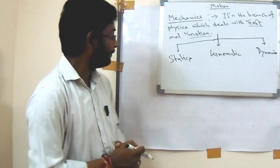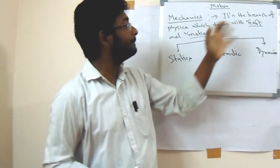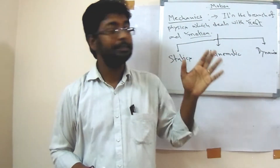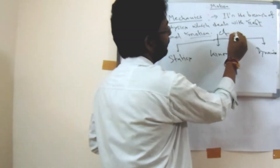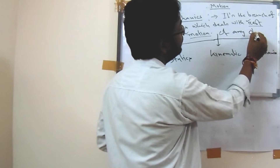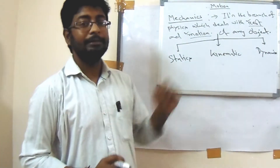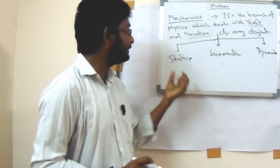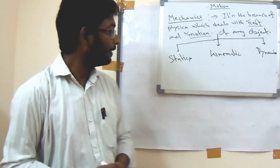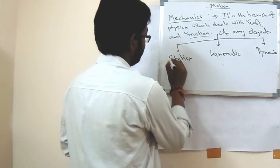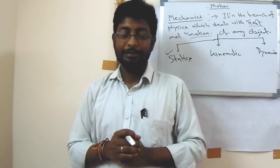So first, what is statics? You can understand that mechanics is the branch of physics which deals with the rest and motion of any object. Now mechanics has three types: statics, kinematics, and dynamics. So what is statics? The very basic idea of statics is that...